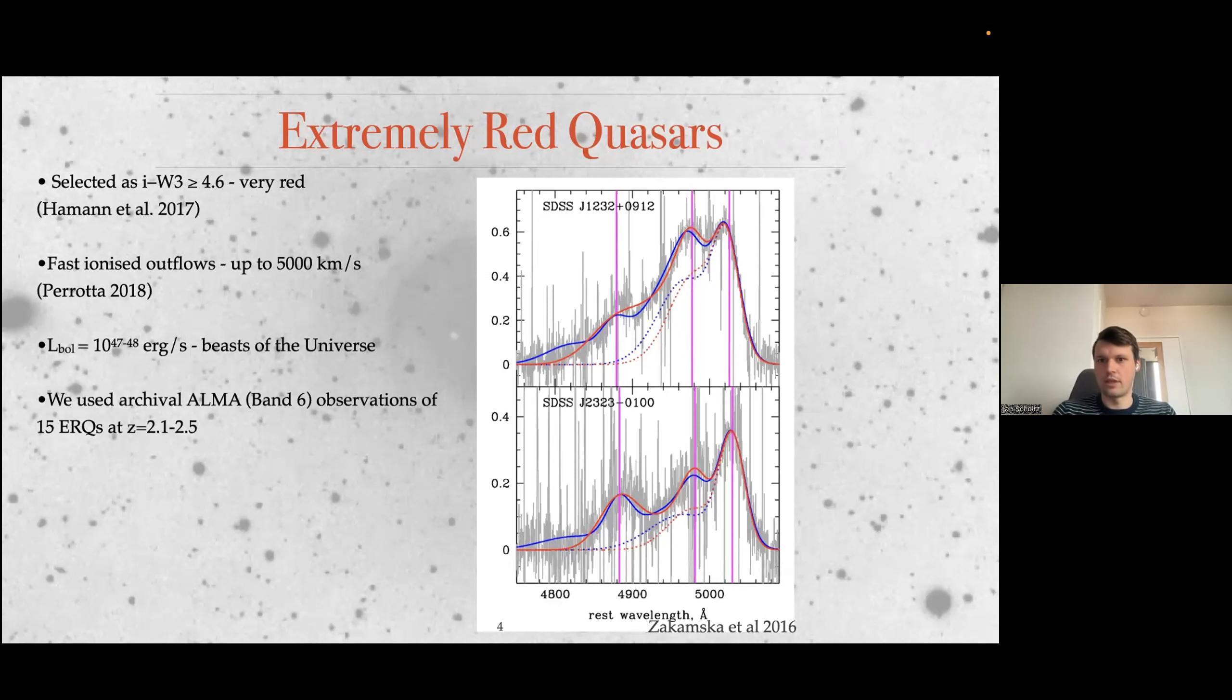They have very powerful outflows. Ionized outflows up to 5,000 kilometers per second. You can see the O3 profiles on the right, and you can actually see that the O3 doublet is almost completely merged together, it's just blended. There are supposed to be several distinctive peaks, but it's not, it's just one. And they are luminous. The bolometric luminosity is around 10 to 47 to 48 ergs per second, or 10 to 13.2 solar luminosities and higher.